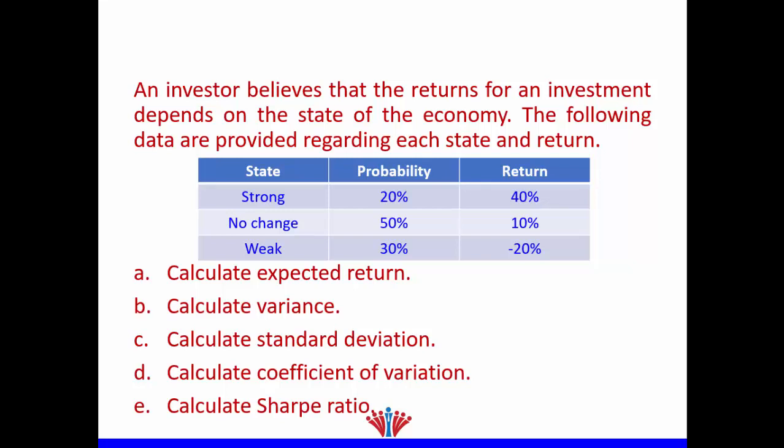This is an example about probability. An investor believes that returns for an investment depend on the state of the economy. The following data are provided: three states — strong, no change, or weak. Strong has a probability of 20% and an expected return of 40%. No change has a probability of 50% and a return of 10%. Weak has a probability of 30% and a return of negative 20%. The summation of the probabilities must always equal 100%.